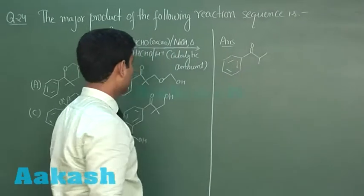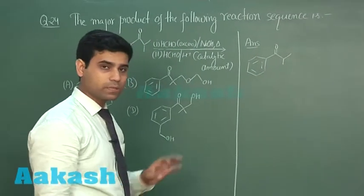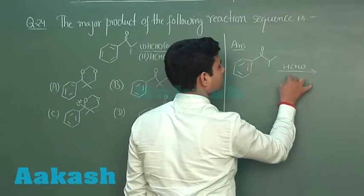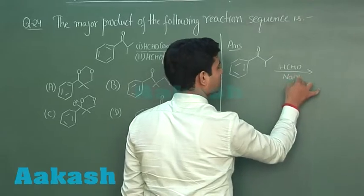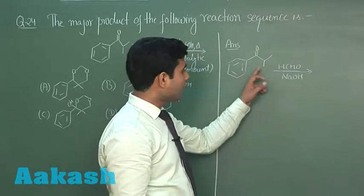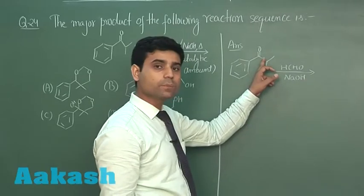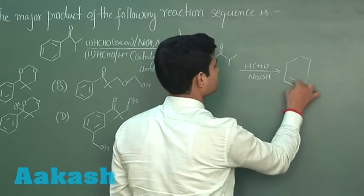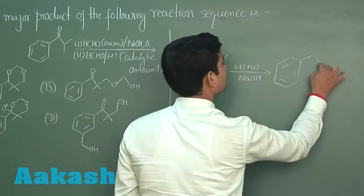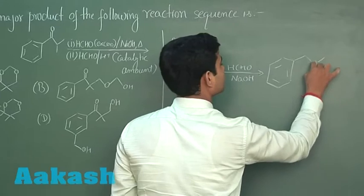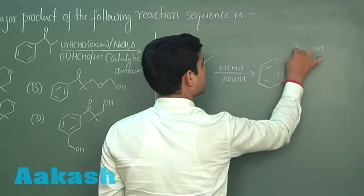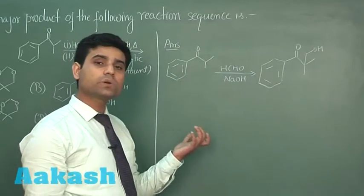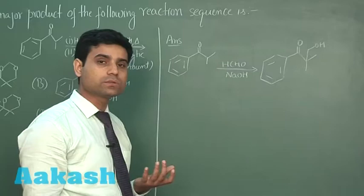In the first step, when it reacts with HCHO and sodium hydroxide, cross-aldol condensation will take place, alpha hydrogen will be removed from this position. And this product will be obtained. As we have HCHO in excess and we have sodium hydroxide also.